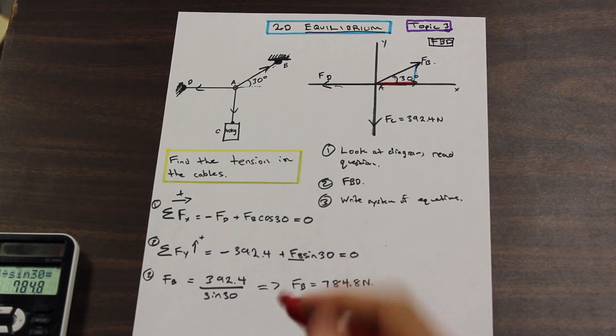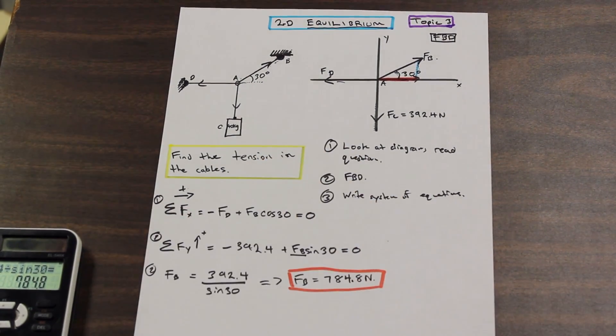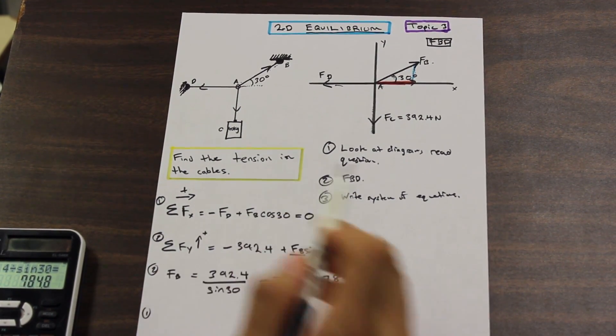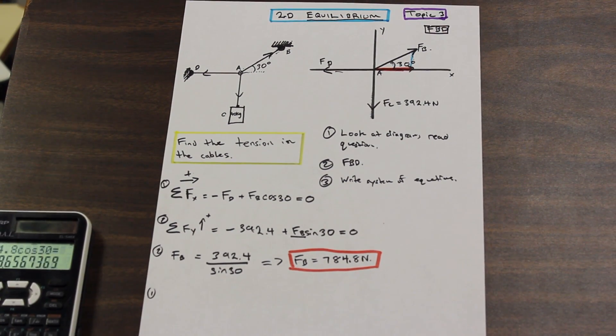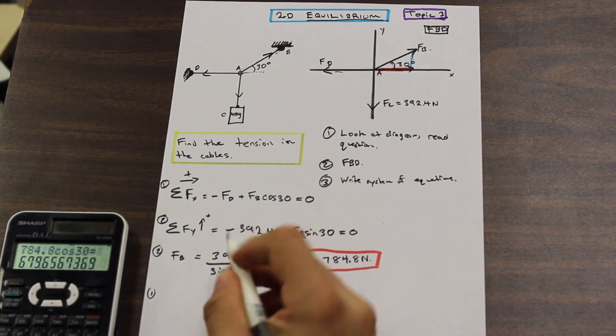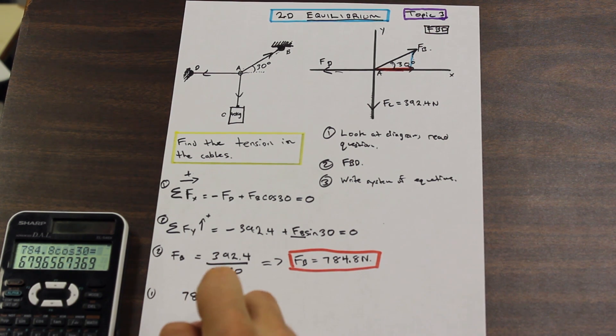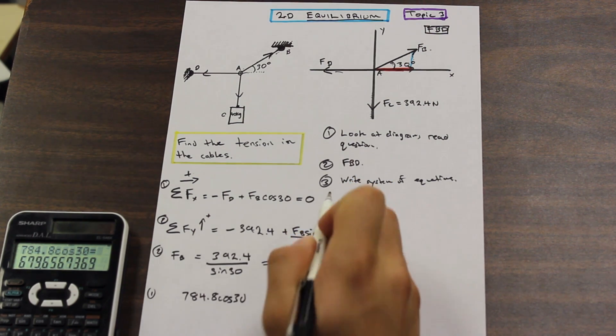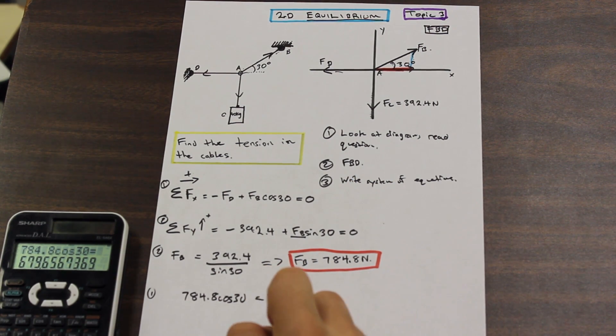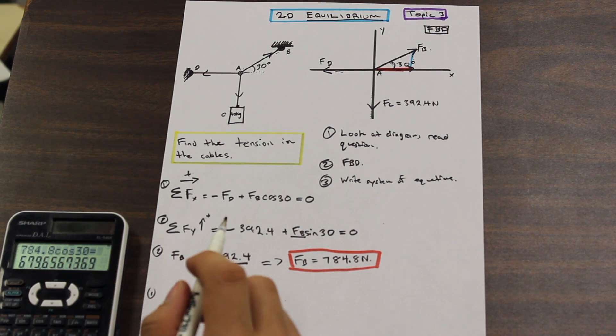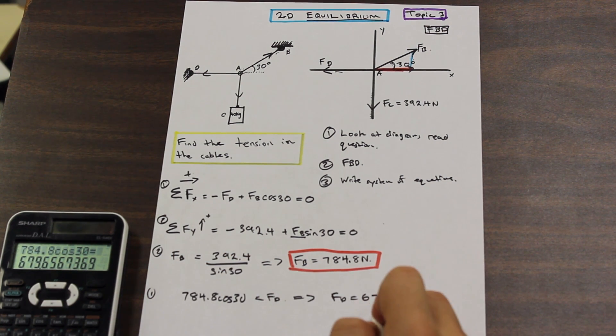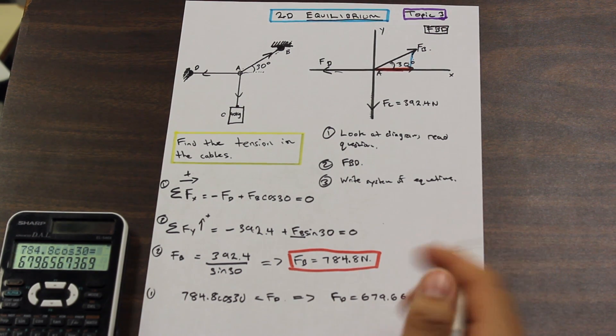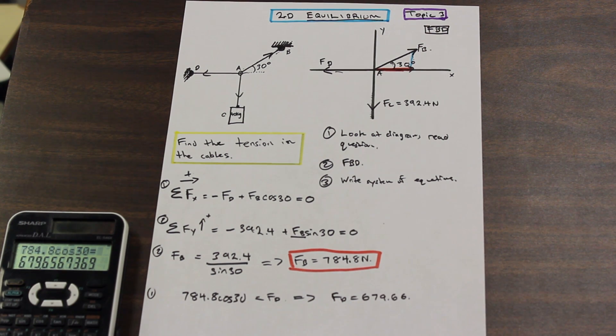Good. So we've found Fb, and now all we need to do is go up to our equation one. And let's write that here, and we need to just plug this in, and from that we should be able to get. So we can say that 784.8 cosine 30, so I'm working with equation one now, and I'm just taking Fd, I'm moving it to the other side and isolating it, is equal to Fd. So that means that, well, Fd is equal to 679.66. We'll say that it's, we can just say it's 680. That's fine, but we'll leave it at that.